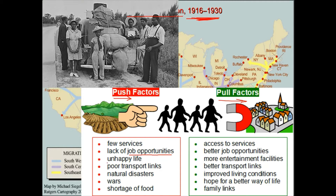Other push factors included poor transportation — there weren't many roads or railroads in the South, which hampered economic growth. You don't build factories without roads because you can't ship goods in and out. Wars have historically pushed people out of countries, and you also see people leaving due to internal strife and food shortages.